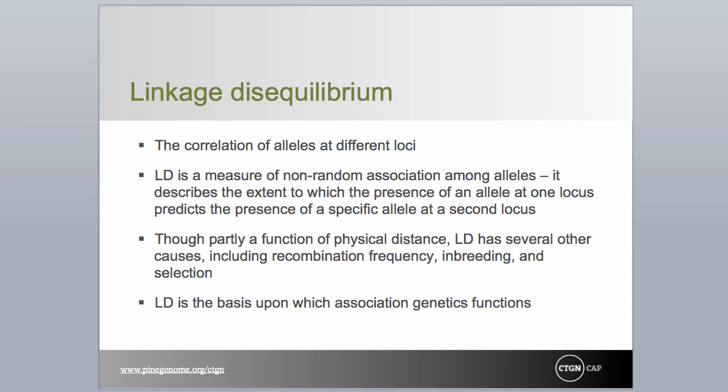A more complex concept is that of linkage disequilibrium, or LD. LD, which is a measure of non-random association among alleles at different loci, may result from many factors. Since linkage disequilibrium is central to the application of association genetics, it will be discussed in much greater detail in Module 10.